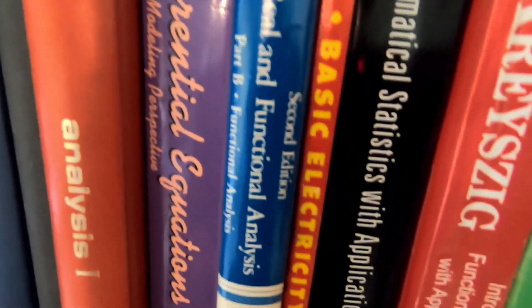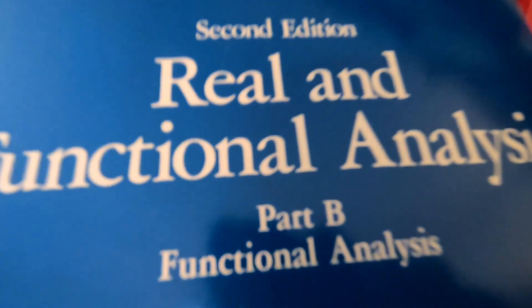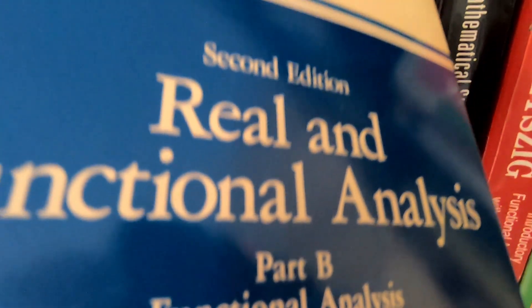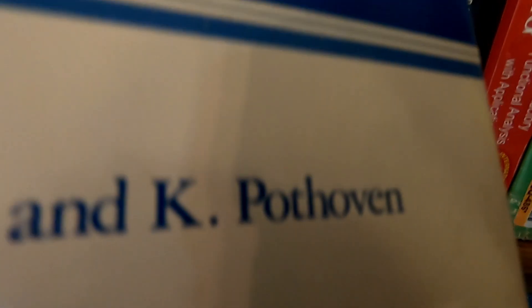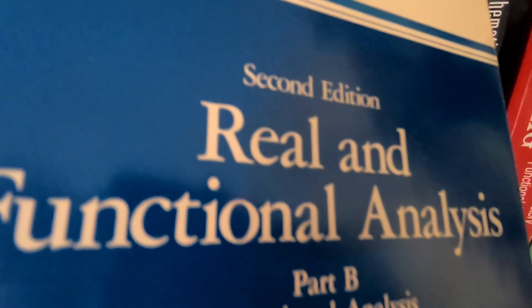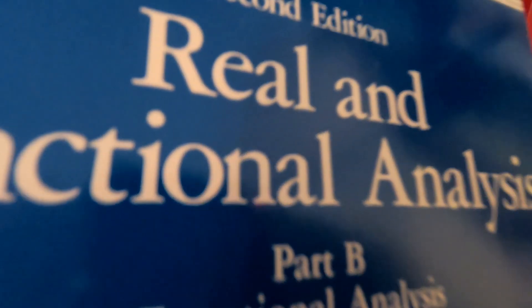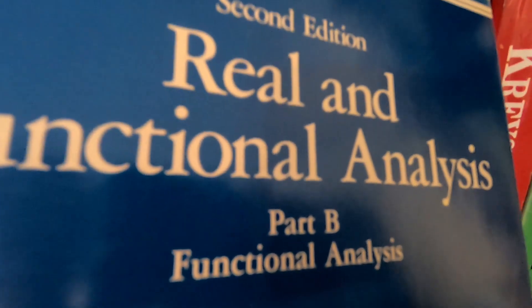This is an advanced book on real and functional analysis — this is Part B, which is on functional analysis. I believe Part A is on real analysis, and I do not own the first part. It's written by Mukherjea and Pothoven. It's a very, very advanced book, graduate level for sure. I have only used this book briefly as a reference, mainly when I was in graduate school, and it's been sitting here for quite some time.